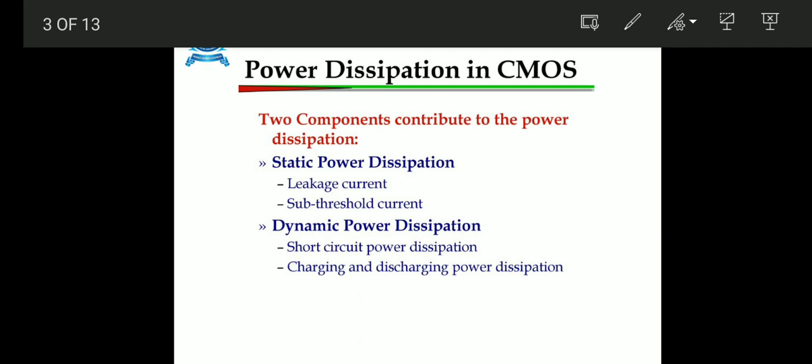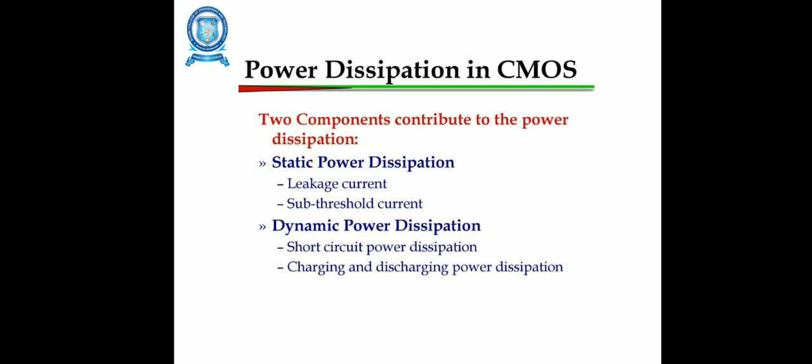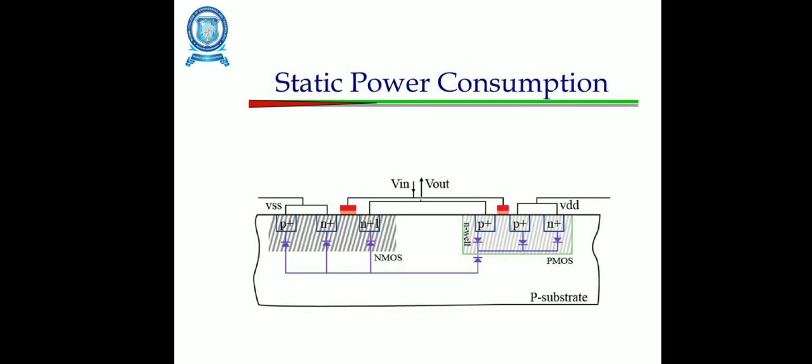Switching power dissipation is due to the charging and discharging of the total load, which includes output capacitors and other parasitic capacitors. At a very high level, we can say the switching power dissipation is equal to alpha times VDD. This occurs in short circuit power dissipation, and various switching power dissipation can occur in static power circuits in a much understandable way.